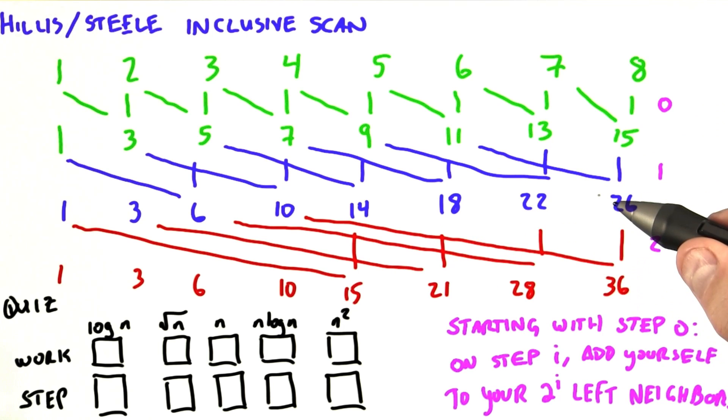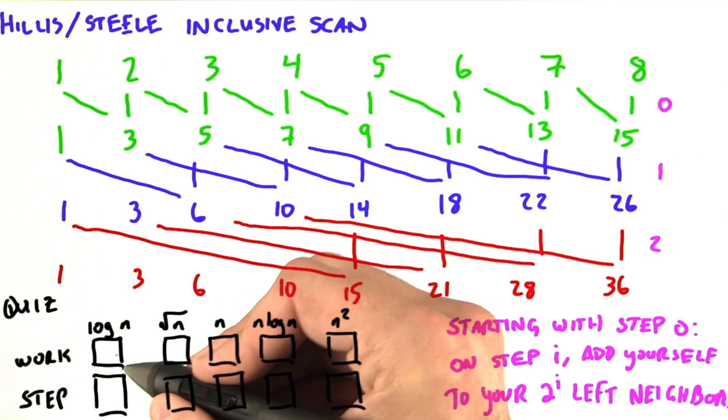So if that sounds to you like some sort of log, you're right. There are exactly log n steps to compute this scan, so our step complexity is log n.